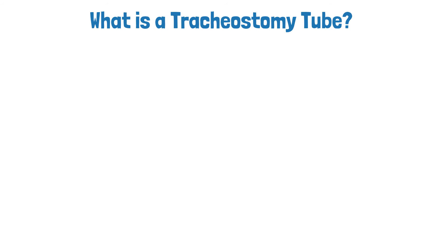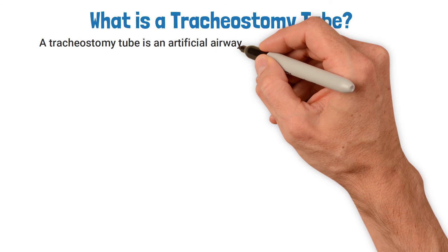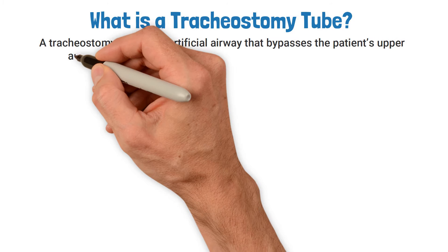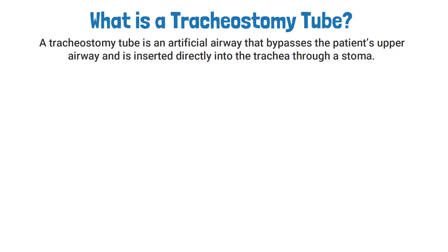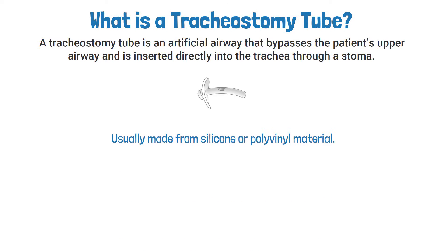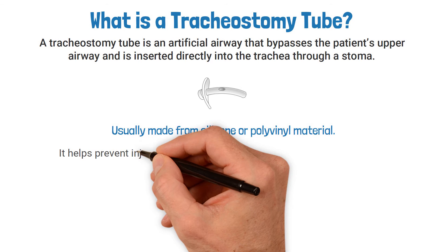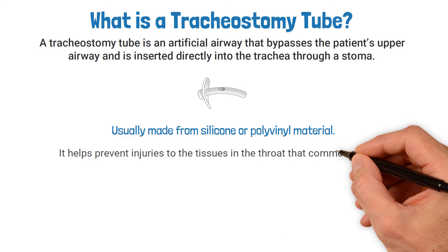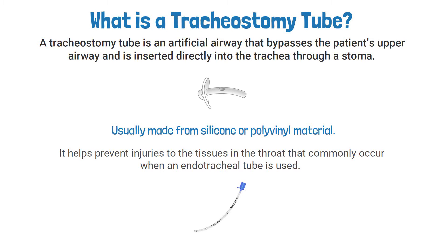A tracheostomy tube is an artificial airway that bypasses the patient's upper airway and is inserted directly into the trachea through a stoma. The tube itself is usually made from silicone or polyvinyl material. By bypassing the upper airway, it helps prevent injuries to the tissues in the throat that commonly occur when an endotracheal tube is used.